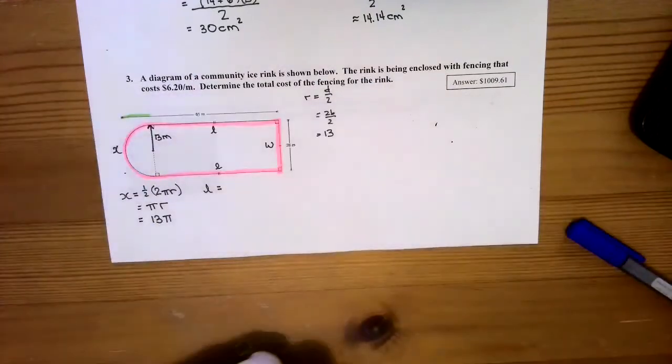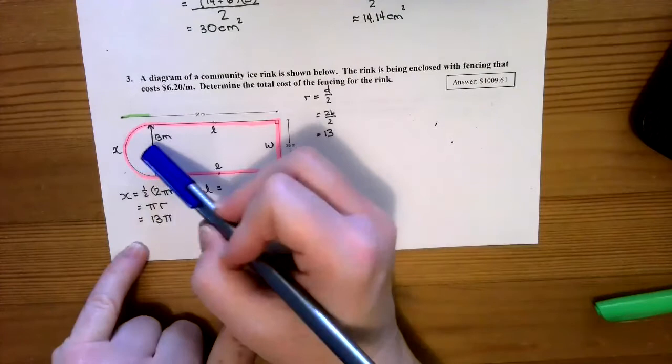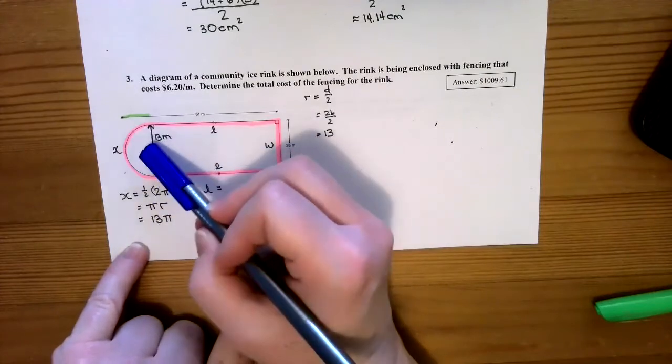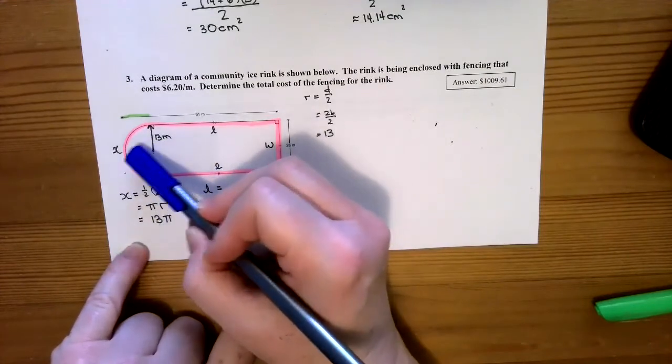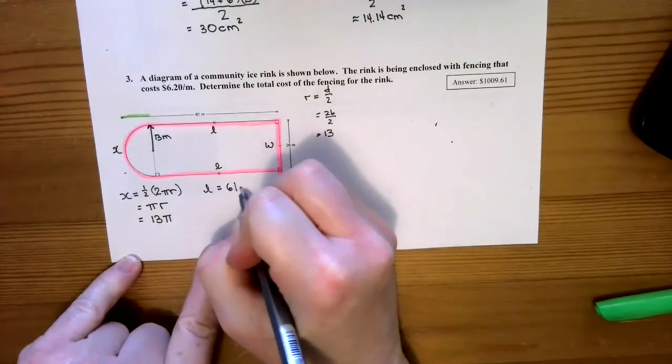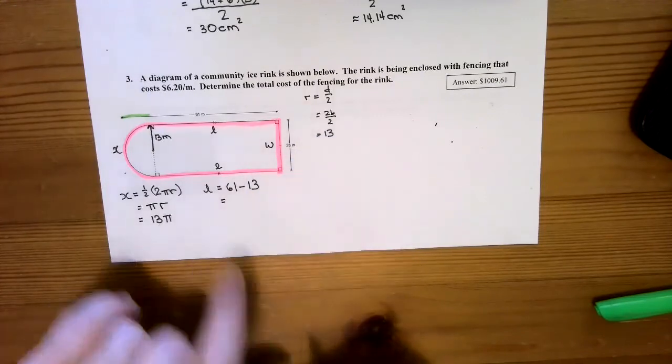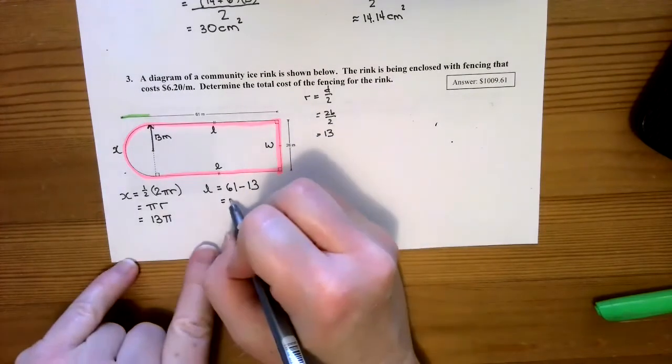That part just happens to be the radius of the circle. The radius is from the center to any of the outside edges, so in this case, the radius is 13. So it's going to be 61 minus 13, which equals 48.